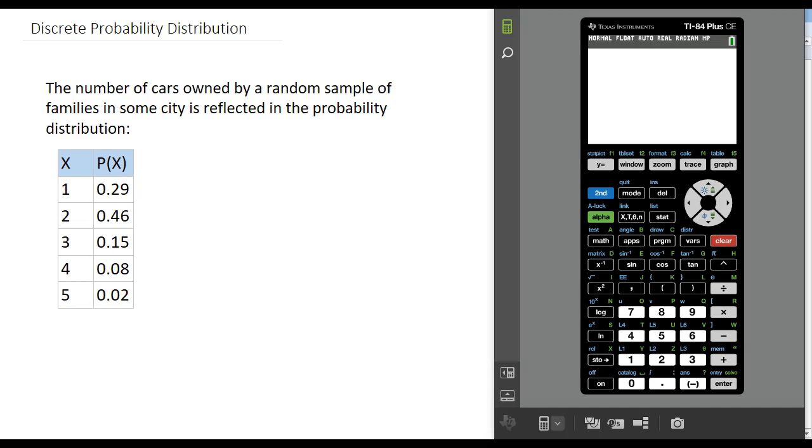Here's an example. We've taken a random sample of families in some city and determined how many cars they own, and the results are reflected in this probability distribution. This is a discrete probability distribution because the number of cars somebody owns is countable. In fact, in this city, it looks like each family owned somewhere between one and five cars.